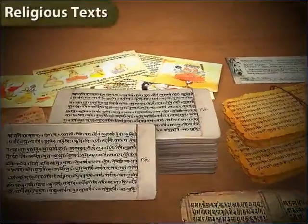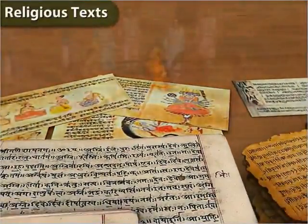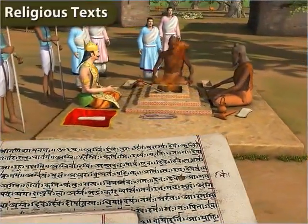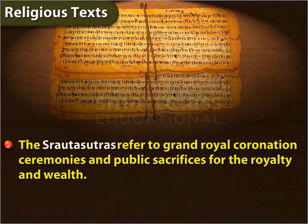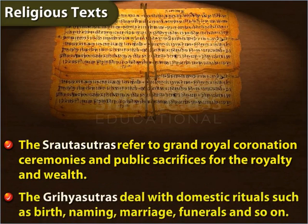In the literature of the post-Vedic period, there is a great deal of reference to rituals and sacrifices. The Srotasutras refer to grand royal coronation ceremonies and public sacrifices for the royalty and wealth. The Griha Sutras deal with domestic rituals such as birth, naming, marriage, funerals and so on.